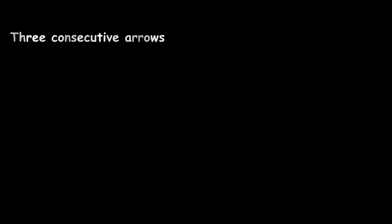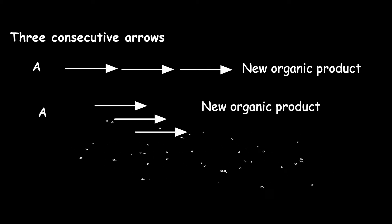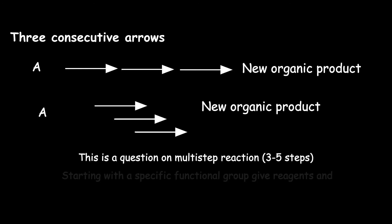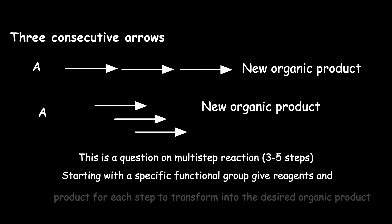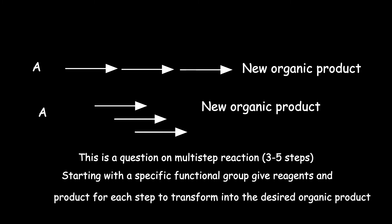The three consecutive arrows, either one after another or stacked, represent a question of multi-step reactions from a specific starting functional group and other reactants. You are expected to give the reagents and products for each step of the pathway